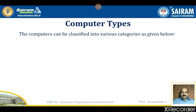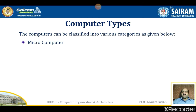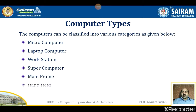Let us see about computer types. A computer can be classified as a fast electronic calculating machine that accepts digitized input information, processes it as per the list of internally stored instructions and procedures. The resulting list of instructions are called programs and our internal storage is called computer memory. Computers are classified into various categories: microcomputer, laptop computer, workstation, supercomputer, mainframe computer, handheld computers, and multi-core computers.